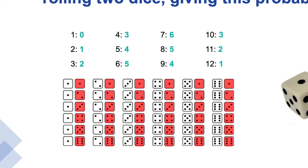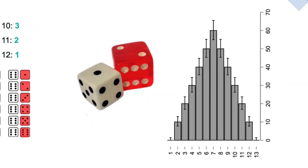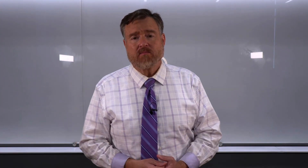The probabilities then start decreasing, all the way down to only one way to get twelve, in that both dice show a six. To the right, we see this probability distribution with the most frequently occurring score in the middle. The score of seven has the highest frequency, with descending frequencies on both sides.